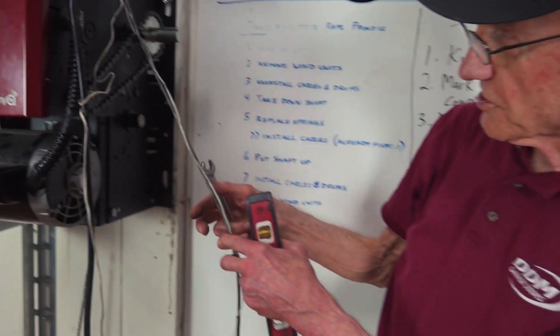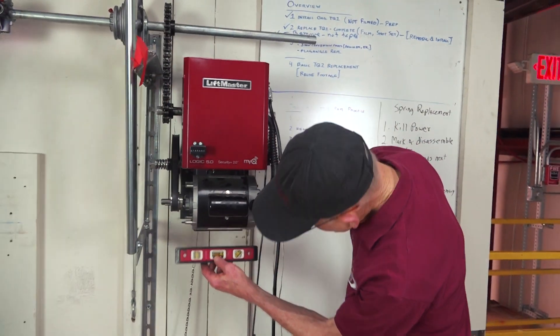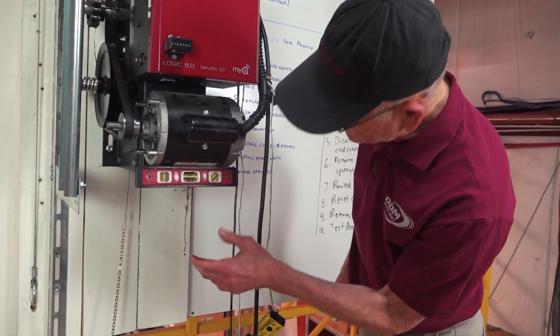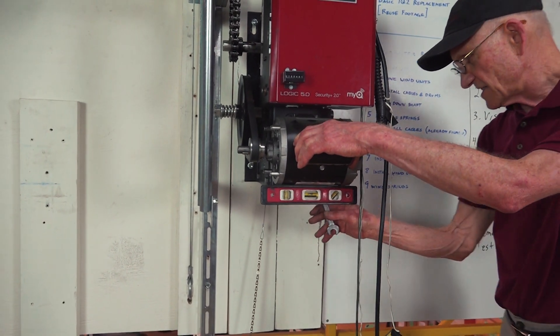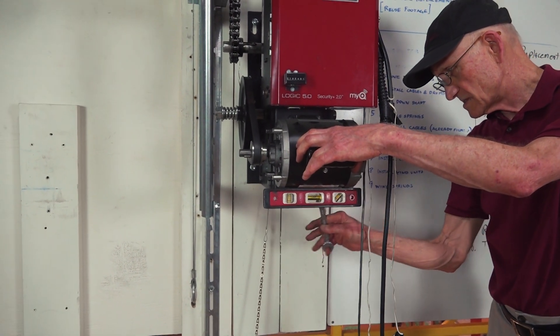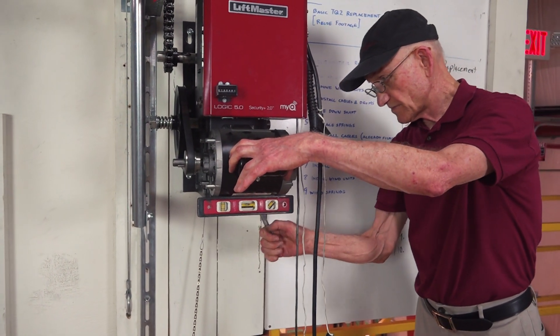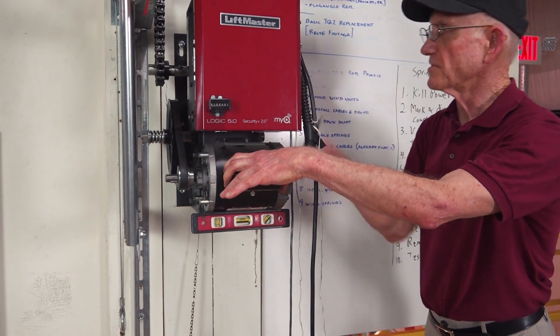Once you get your motor aligned and the belt is tight, you put your level on here, make sure the motor is level, and then you tighten the four nuts and the carriage bolts.